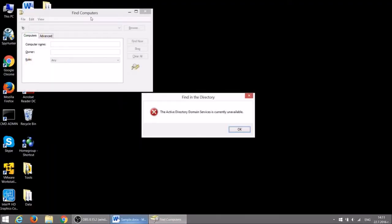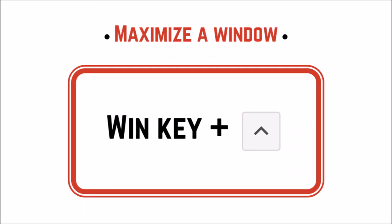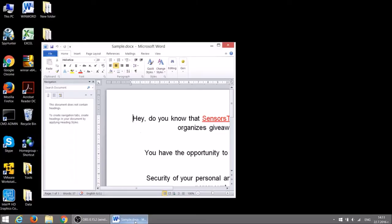You can minimize your current window with Windows key and the down arrow. Maximize it again with Windows key and the up arrow.